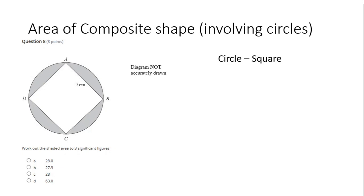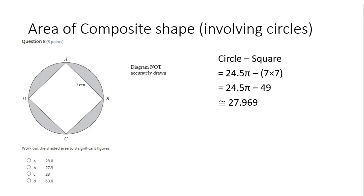Finally, the area of the composite shape involving circles: we've got a circle with a square cut out of the middle. We do the area of the circle minus the area of the square. The circle area is 24.5 pi, and the square area is 7 times 7 equals 49. So 24.5 pi minus 49 is approximately 27.969, which rounds to 28.0 to three significant figures — that zero must be written to show all three significant figures.